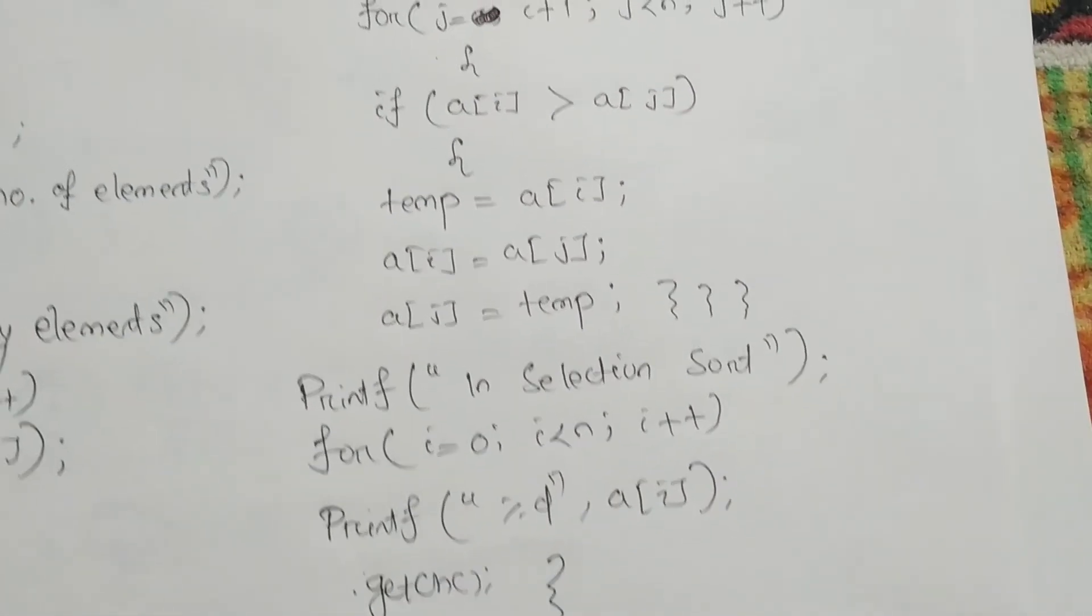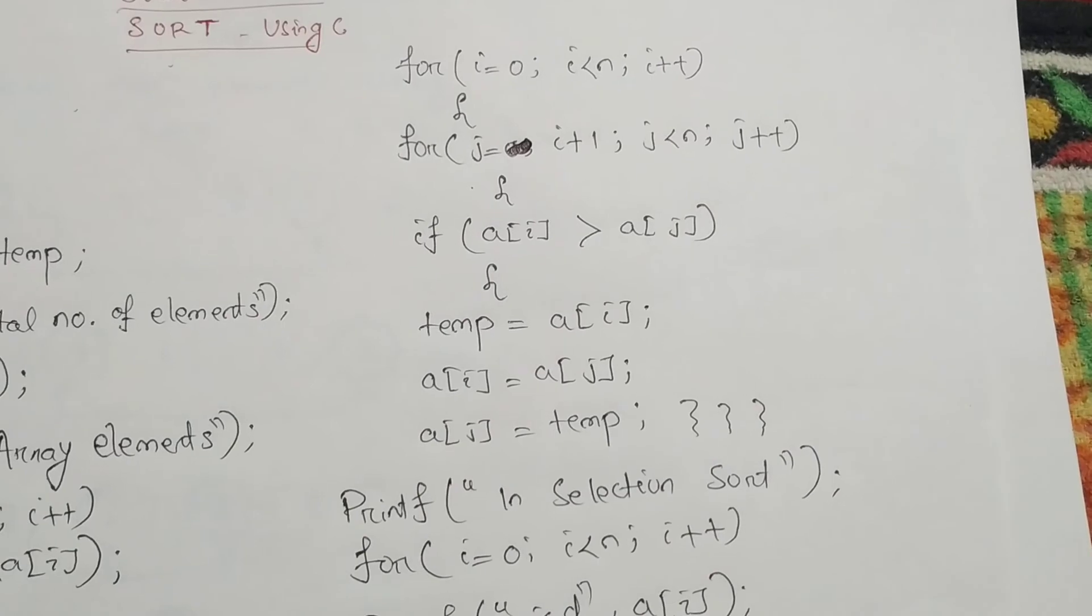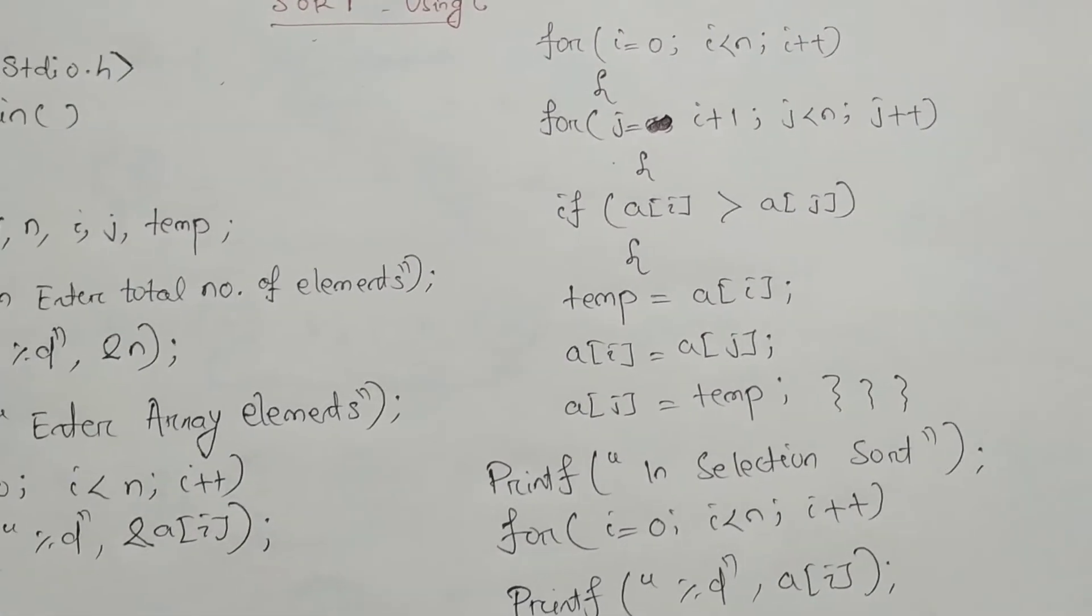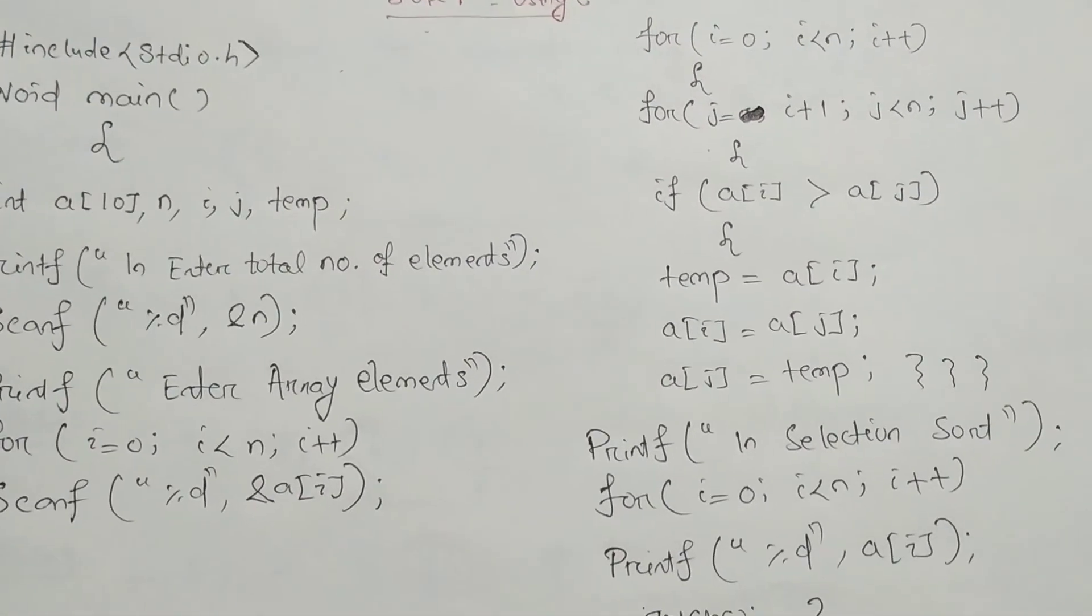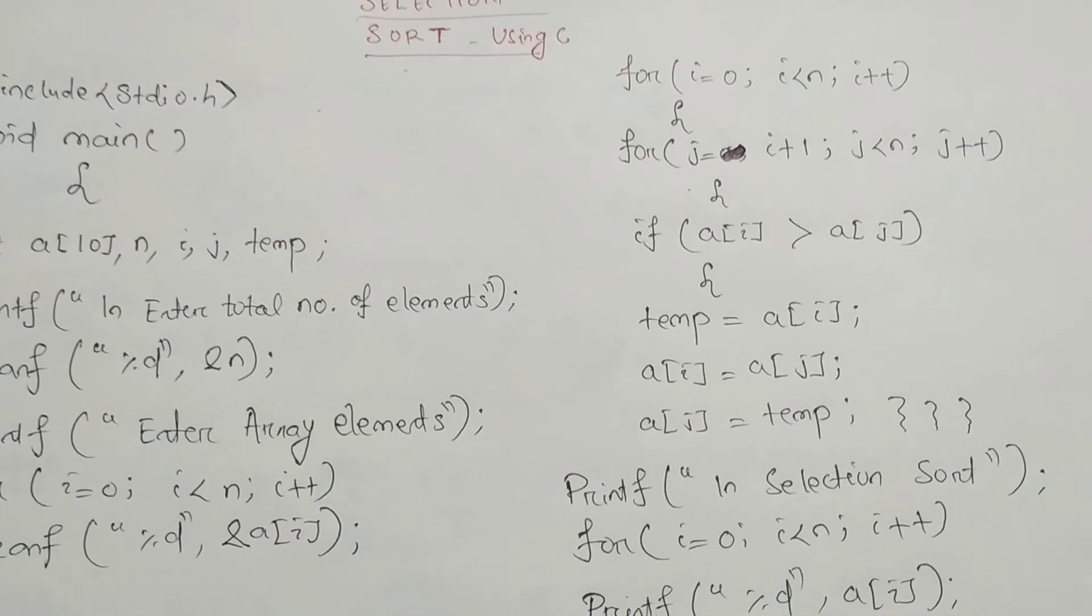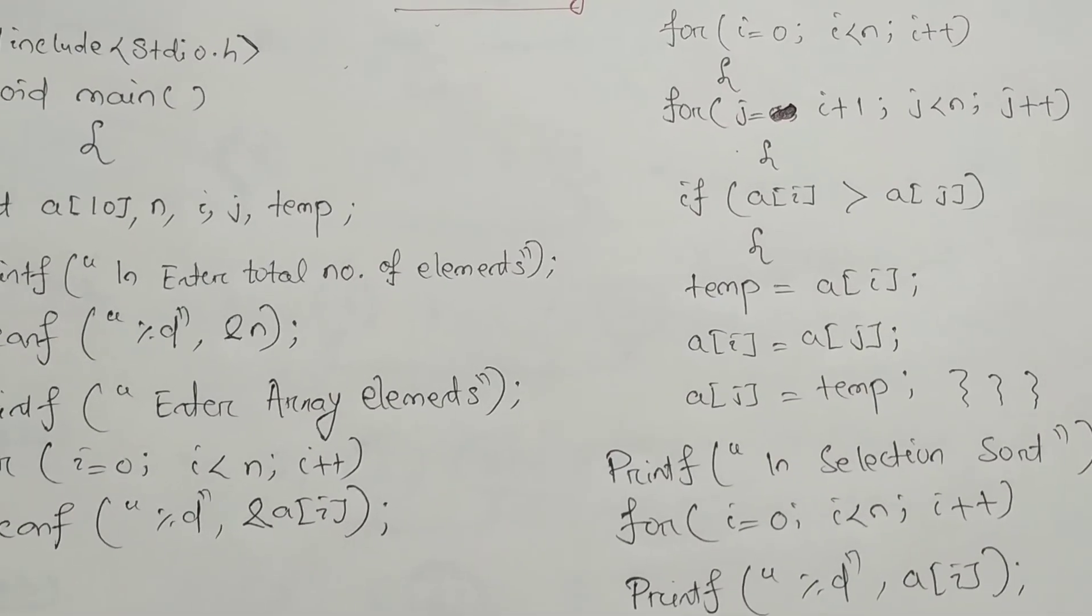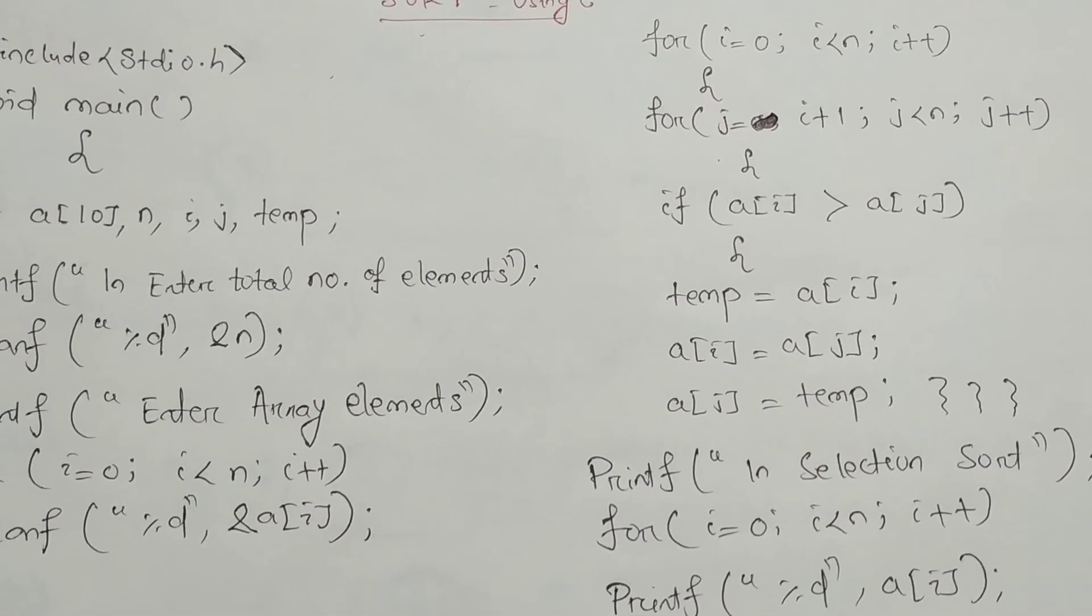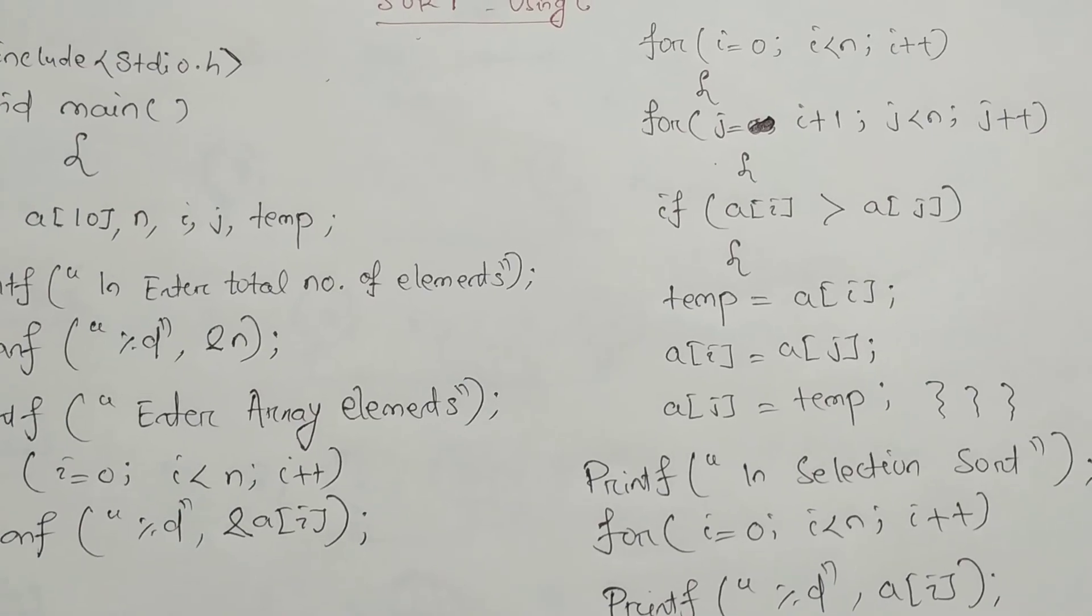Then after using the for loop, we have to print the entire element. Hope you have understood this example, this C programming for selection sort. In our next video, I will show the algorithm for selection sort. Have a good time.